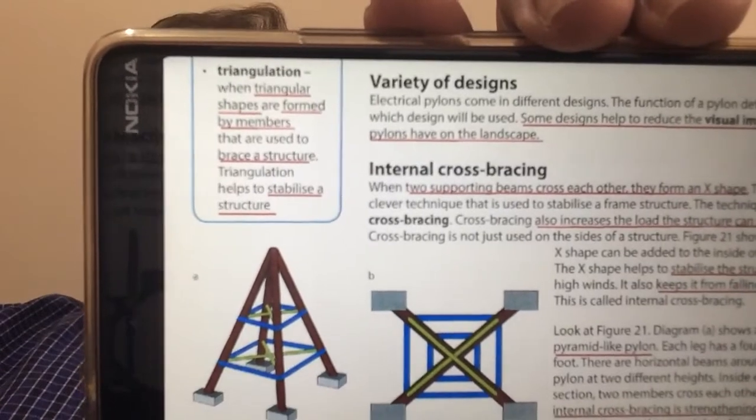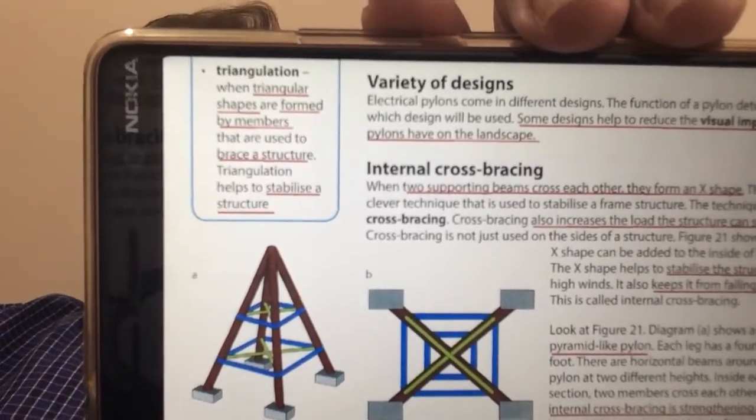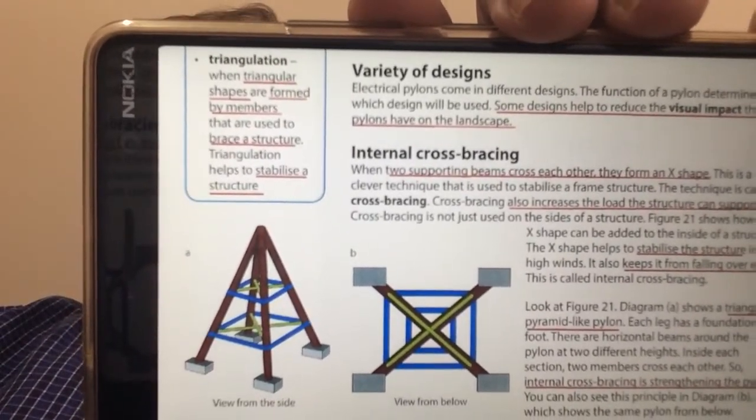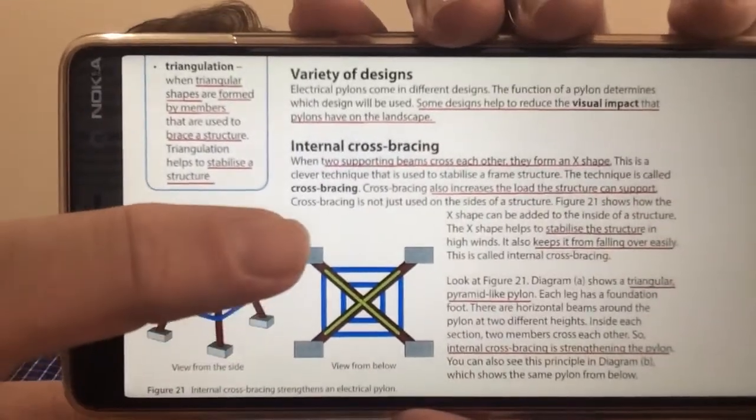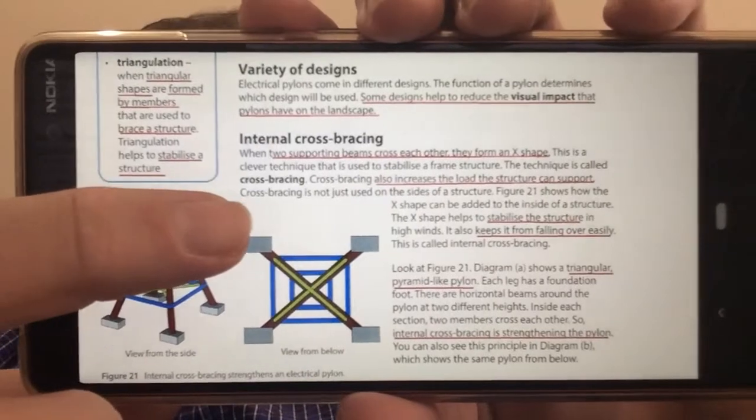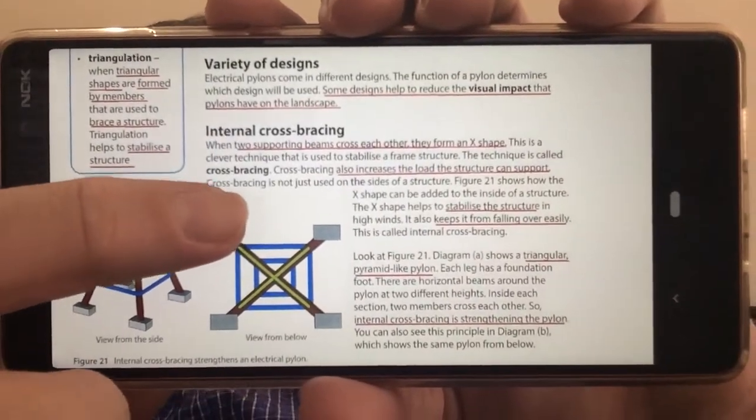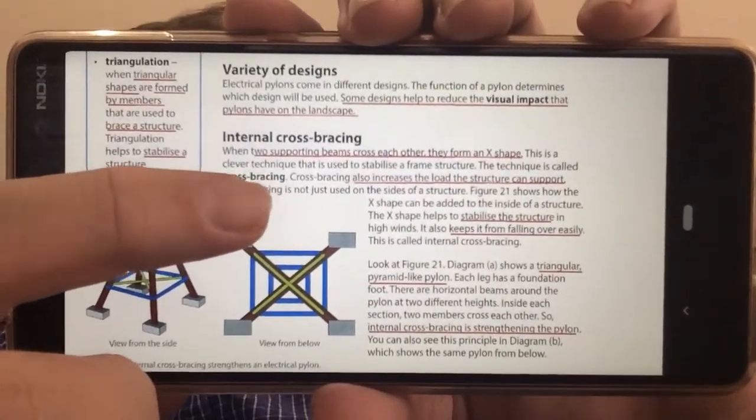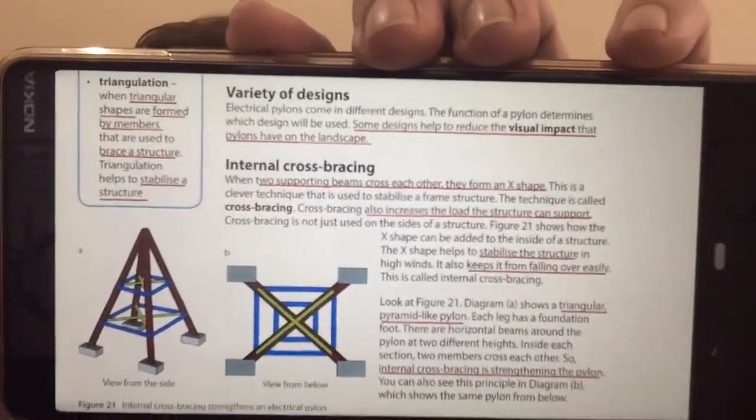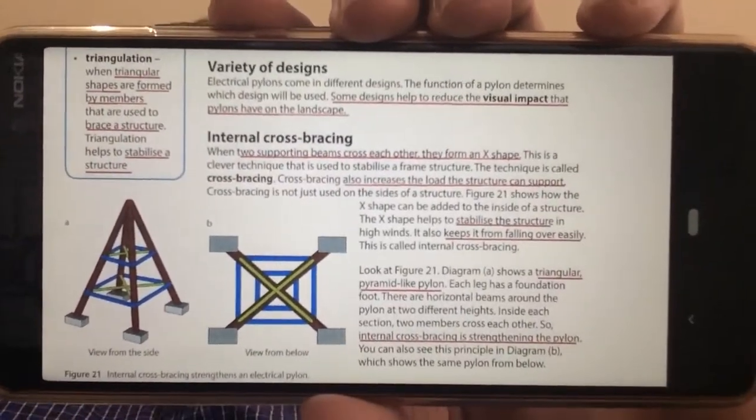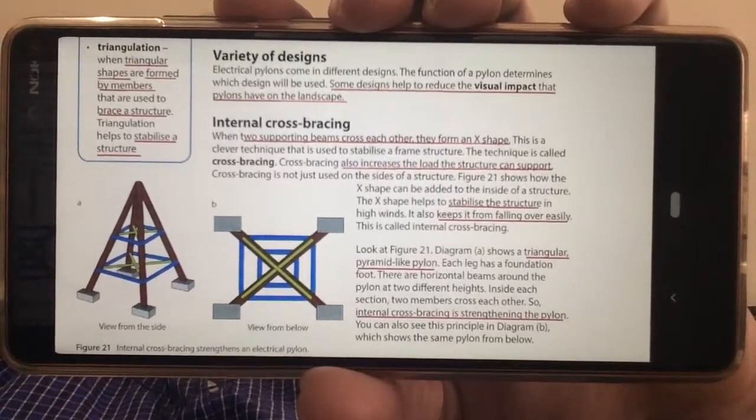When triangular shapes are formed by members that are used to brace a structure, triangulation helps to stabilize the structure as well from strong winds and things like that. So these electrical pylons have a variety of designs. Some of them are designed to reduce the visual impact on the area or the landscape where they are.